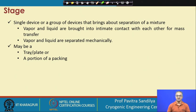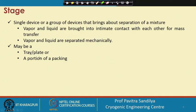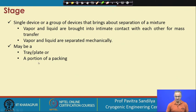First let us see what is a stage. A stage is a single device or a group of devices that brings about some separation to the mixture. In a stage, the vapour and liquid are first brought into intimate contact and then they are mechanically separated. Unless we separate them out, we cannot get a better product from the initial feed. The vapour and liquid are intimately mixed and then again physically separated, which can be brought about by a tray, plate column, or some packing.